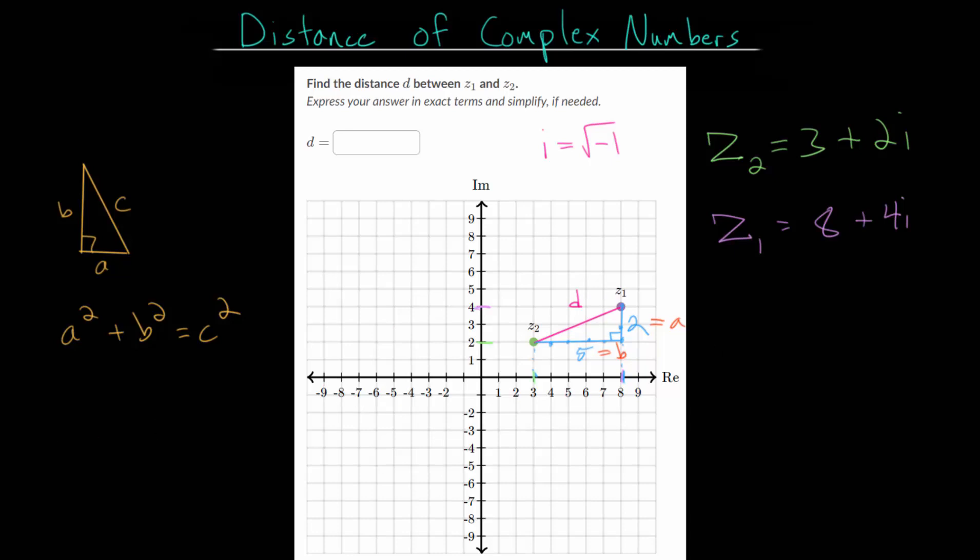The hypotenuse is C in this formula. So we can write that 2 squared plus 5 squared is equal to this hypotenuse squared, which we call D for distance.